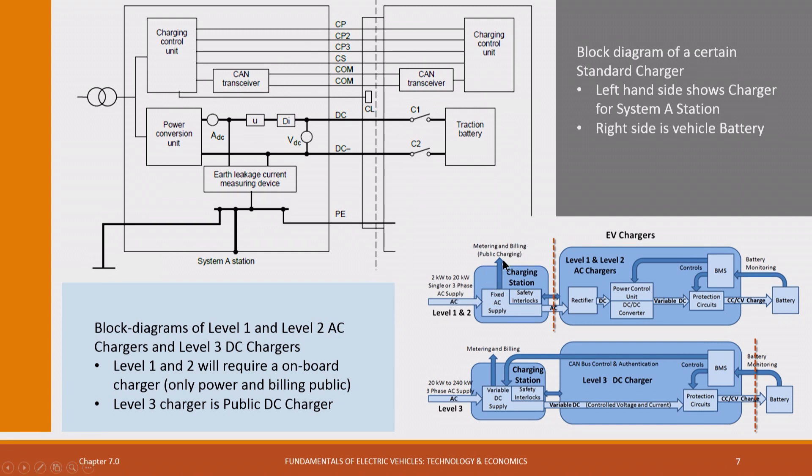This charger will also have metering and billing. This plug point will then after metering and billing will go to this charger, which will convert the AC to DC and will communicate with the battery. This is called level 1 or level 2 charger. We will get into details, what is level 1, what is level 2. It is always what is called onboard charging. It is inside the vehicle.